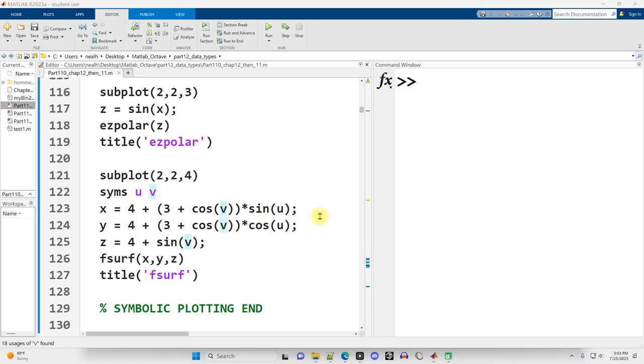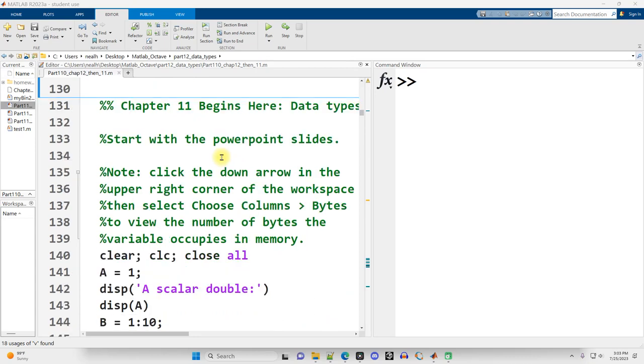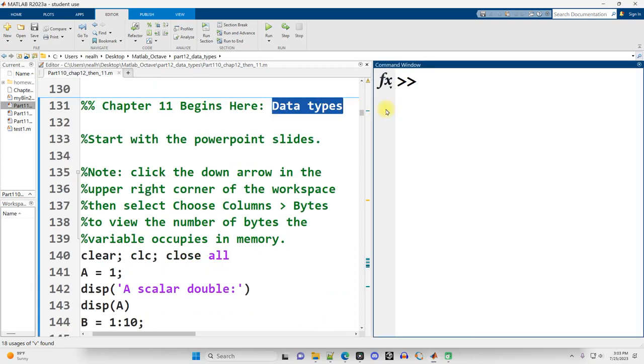This video is continuing right where the previous video left off. We're in part 1.0, chapter 12, then 11. That refers to MATLAB for Engineers, 5th edition, where the contents of this document covered some material from chapter 12. That was the previous video where we were doing symbolic plotting. Now we're going to move backwards to some content from chapter 11, starting with numeric data types, but the chapter itself generally concerns data types.